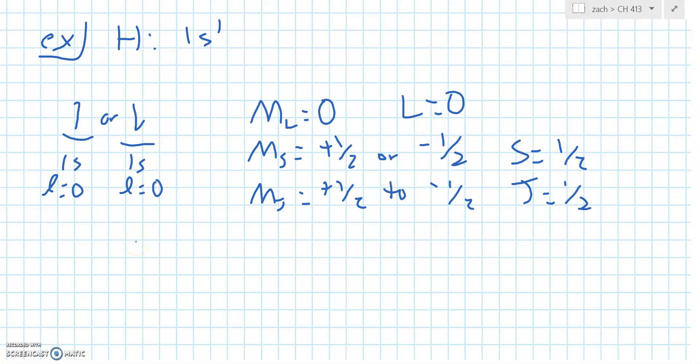So what do we think that the term symbol is then? Our term symbol formula is 2S+1, that fancy L, and then J. Our S is equal to 1/2, so when we plug that in, we get 2, and the J value is equal to 1/2. So for our term symbol for hydrogen, this is 2S1/2, which is read as doublet S one-half, because this is the multiplicity.